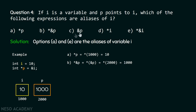For option (c), `&p` means we are accessing the address of p, which is 2000 — which is definitely not equal to i. Therefore, option c is also not correct.